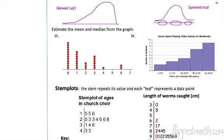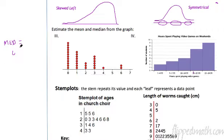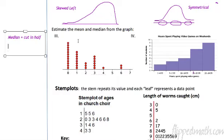Now let's talk about estimating the mean and median from a graph. You just learned that as data is skewed or pulled to one side, the mean goes with it. The median is where you cut it in half — like a birthday cake. If you cut it into two exactly equal parts, that's where the median is. Remember, the median is where 50% of the data lies, so you cut it at the 50% mark.